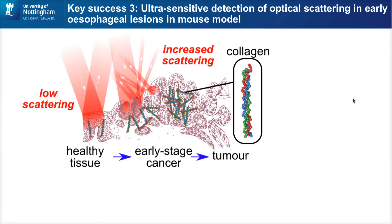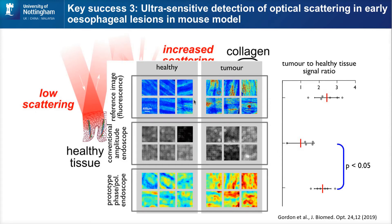A third success of holographic imaging is the ultra-sensitive detection of optical scattering. The concept is that at a very early stage of cancer, disordered microstructure forms on a small scale — both from cell structure and from dense networks of collagen — reflecting light differently. When we imaged mouse esophageal tissue, with healthy tissue on the left and tumors on the right using a DAPI stain, we could see increased density of cell nuclei. Using the optical phase information and looking at the level of deformity of the wavefront, we showed improved contrast compared to using amplitude information alone.